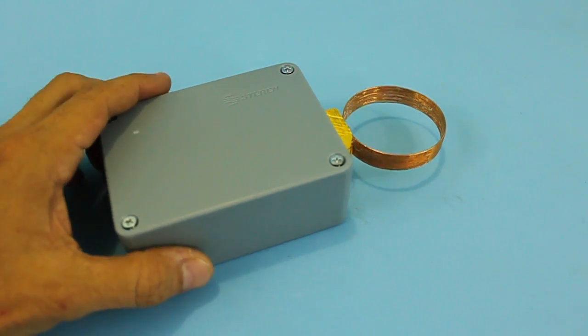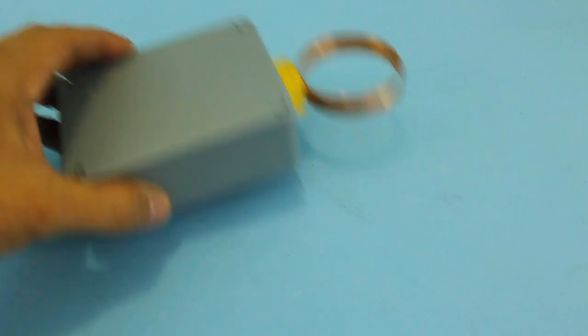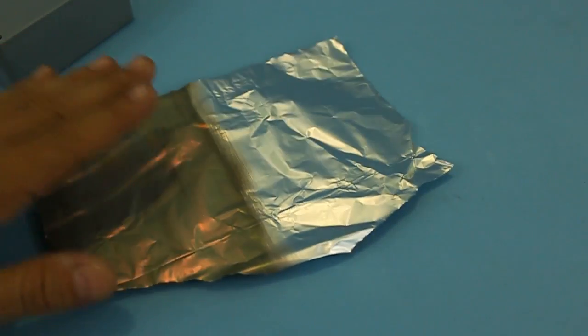In fact, it is very easy to block the electromagnetic pulse. You just need a thin sheet of metal such as this aluminum foil from the kitchen. Let's see.